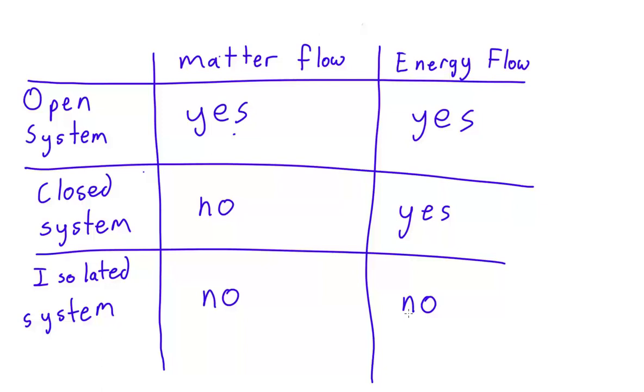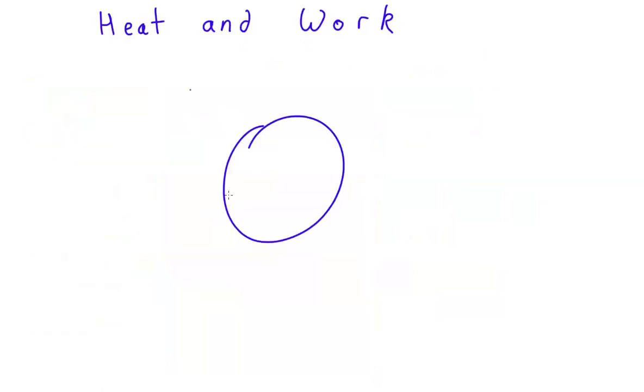So now let's consider a closed system. There are only two ways that you can add energy or take energy out of this system. The first is what we call heat, and the symbol for heat is Q.